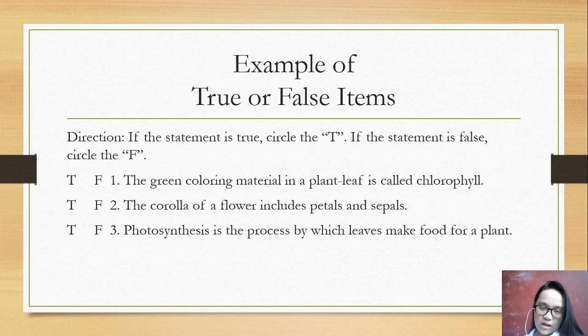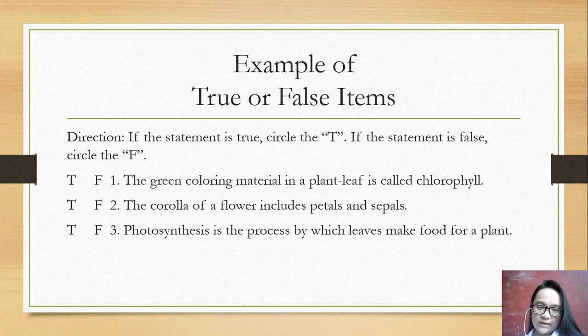So here is an example of true or false items. The direction: If the statement is true, circle the T. If the statement is false, circle the F. Number one: The green coloring material in a plant leaf is called chlorophyll. Number two: The corolla of a flower includes petals and sepals. Number three: Photosynthesis is the process by which leaves make food for a plant.